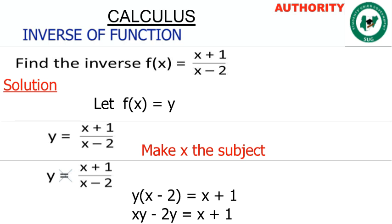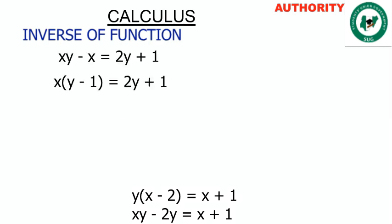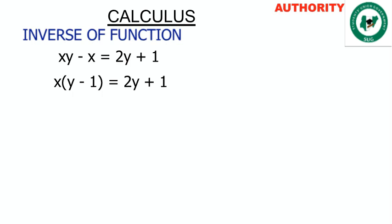Now we collect all terms that have x on one side and the others on the other side. We bring x from the right-hand side to the left-hand side, and take 2y to the right-hand side. When x crosses over, the sign changes, so we have xy minus x equal to 2y plus 1.